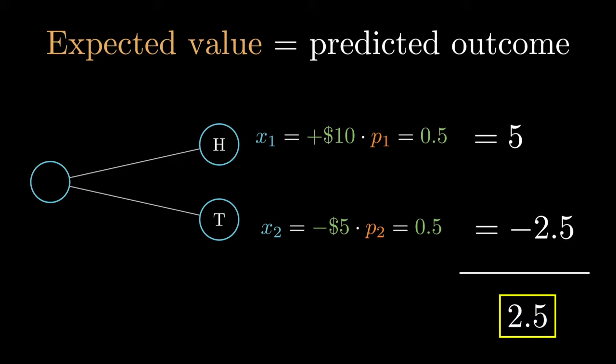In general, the expected value of some event X, E[X], is the sum of all X_i times P_i, where X_i is the outcome of the ith event and P_i is the probability of the ith event.